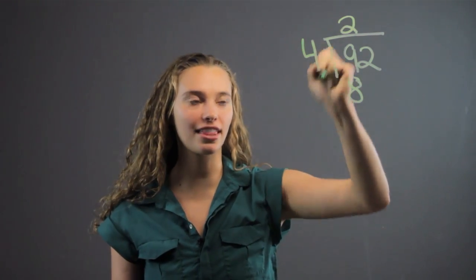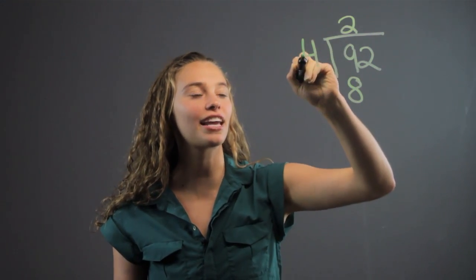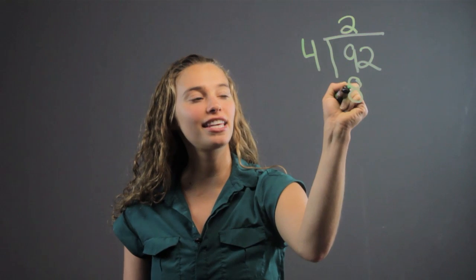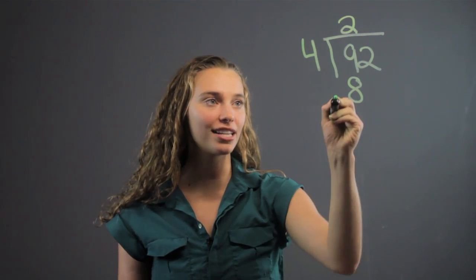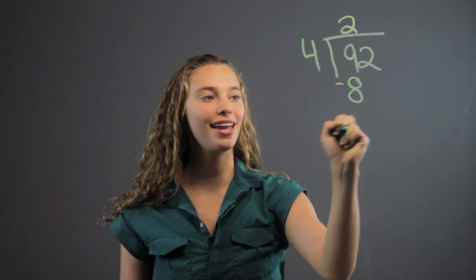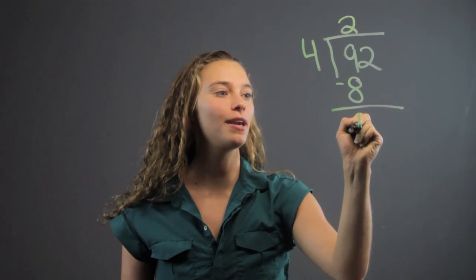Have them show you this so they understand what they're doing—that they have to multiply. They write the 8 right below the 9. And then the next step is subtracting: 9 minus 8 is going to be 1.